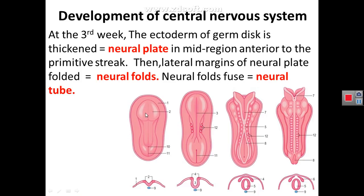During the third week of development, we have a trilaminar germ disc which is formed of ectoderm, endoderm, and mesoderm. At the end of the third week, the anterior part of the ectoderm is thickened and starts to form a thick neural plate. This neural plate then extends along the whole trilaminar germ disc as a thickening of the ectoderm in the midline.